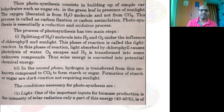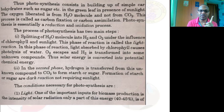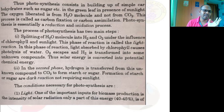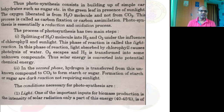Photosynthesis is essentially a reduction and oxidation process: we are reducing water molecules and oxidation is taking place with carbon dioxide. That is why photosynthesis is a complex reaction. The processes of photosynthesis take place in two main steps: the light reaction and the dark reaction.